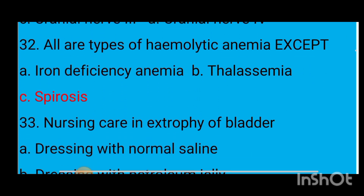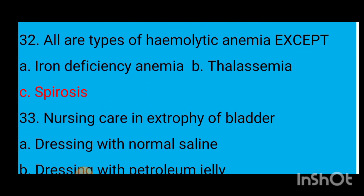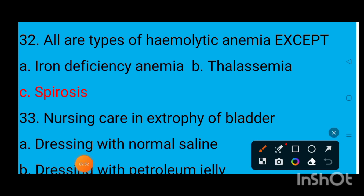Question number 32: All are types of hemolytic anemia except — option A iron deficiency anemia, option B thalassemia, option C spherocytosis. The correct answer is iron deficiency anemia, as it is not a type of hemolytic anemia.